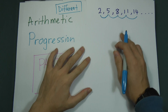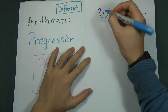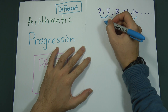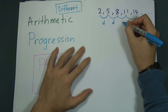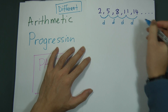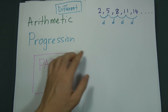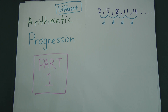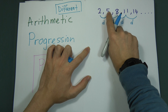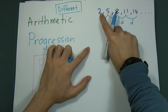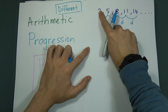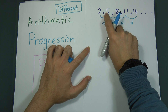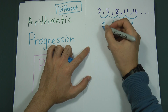In this chapter, difference is represented by the letter 'd' — d stands for difference. So let's find the difference between 2 and 5: you do 5 minus 2, and you get the difference equal to 3.